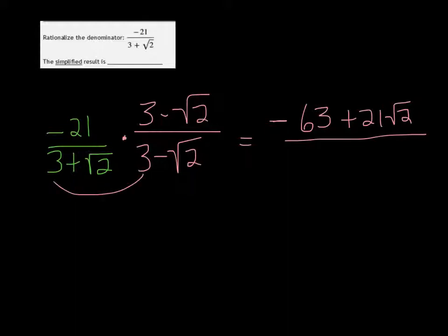On the bottom we FOIL, so 3 times 3 is 9. And then what happens is that the plus 3 root 2 and the minus 3 root 2 cancel out, so we're just left with minus root 4.